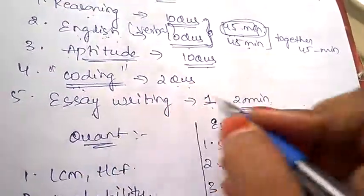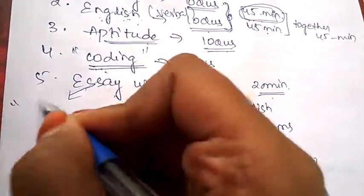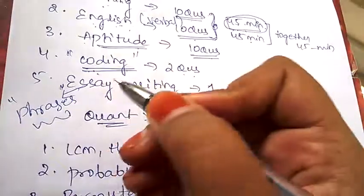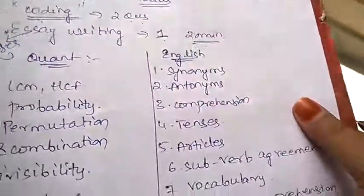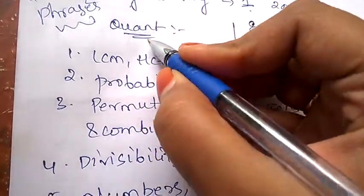In essay writing, they'll be giving you a few phrases, and using all those phrases you have to complete writing the essay within 20 minutes. Coming to quantitative aptitude, the syllabus is as follows.